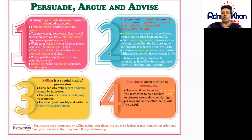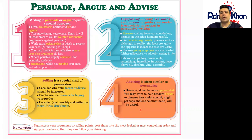Remember, there are four points with regards to persuade, argue and advise. Point one is all about persuading and arguing. Point two is making sure that you signpost the reader using the correct link words — this will sell your argument and make it stronger. Point three is all about selling in persuasion. Point four is advising and persuading. Brainstorm your arguments or selling points, sort them into the most logical and compelling order, and signpost readers so that they can follow your thinking.